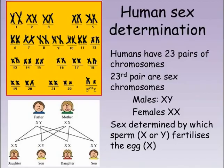Humans have 23 pairs of chromosomes, inheriting one copy of each chromosome from each parent. The 23rd pair of chromosomes are called the sex chromosomes, and these determine whether someone is male or female. Females have a pair of identical chromosomes, both known as X, whereas males have one copy of this X chromosome and one copy of a Y chromosome.